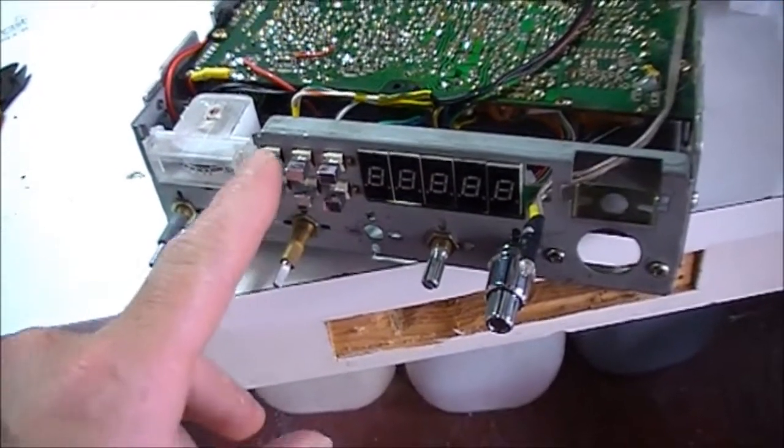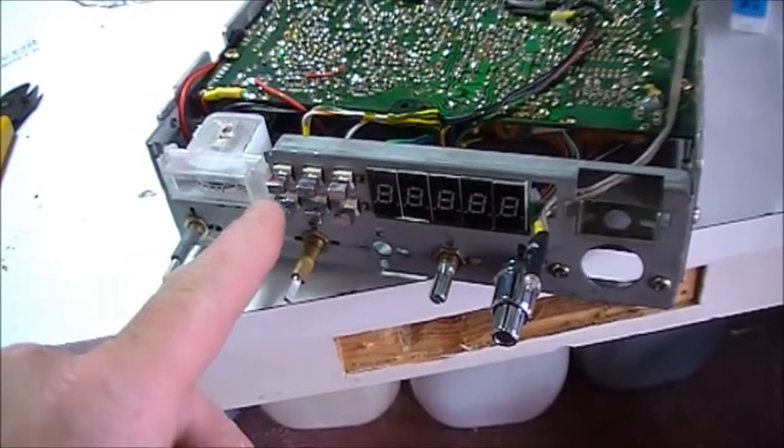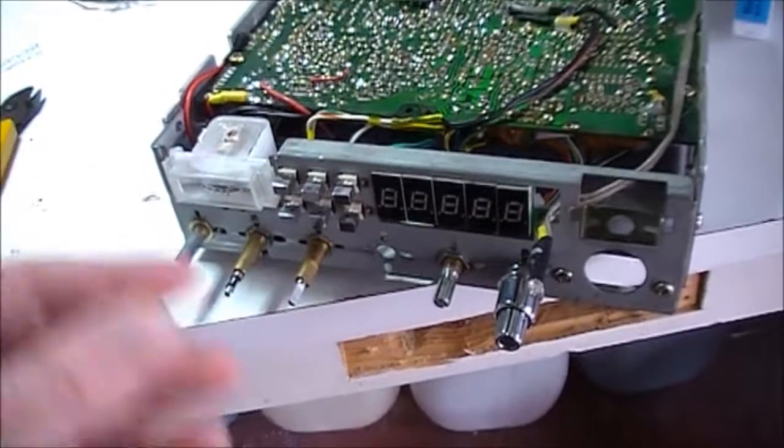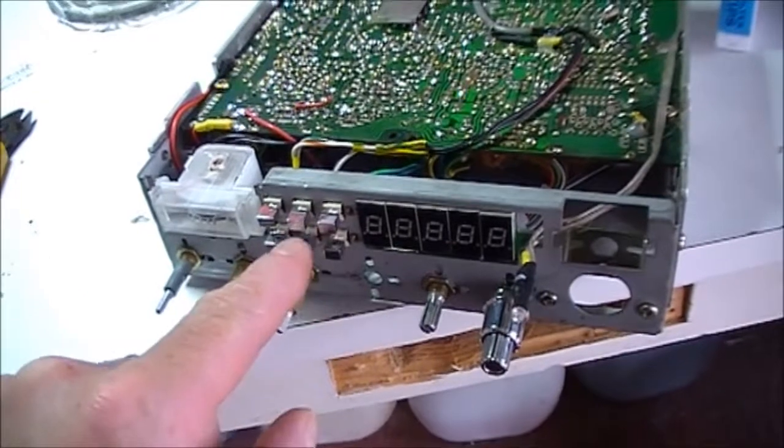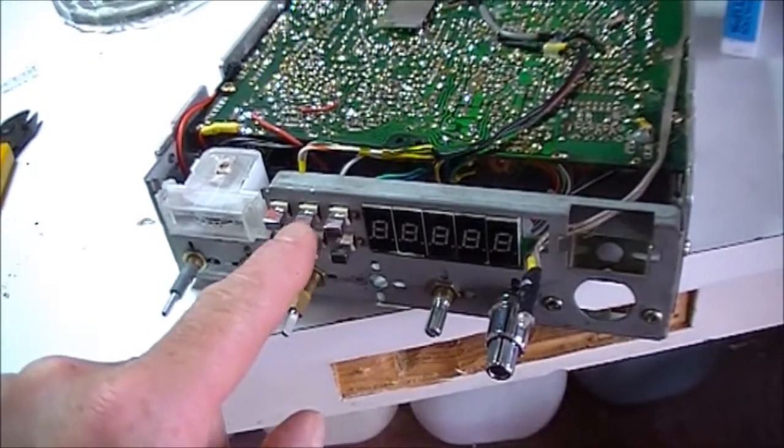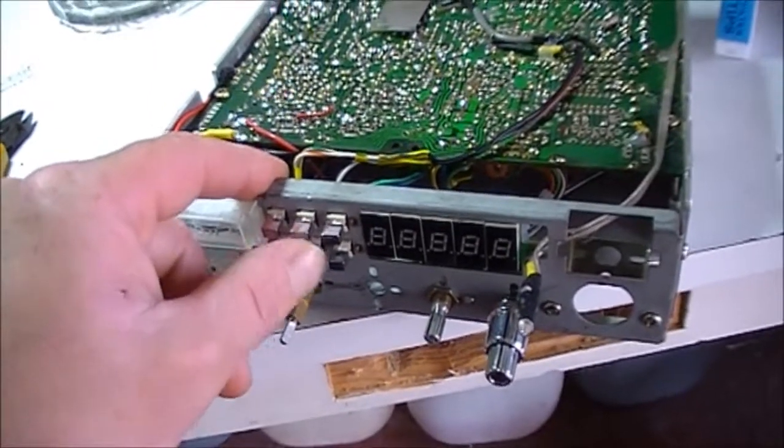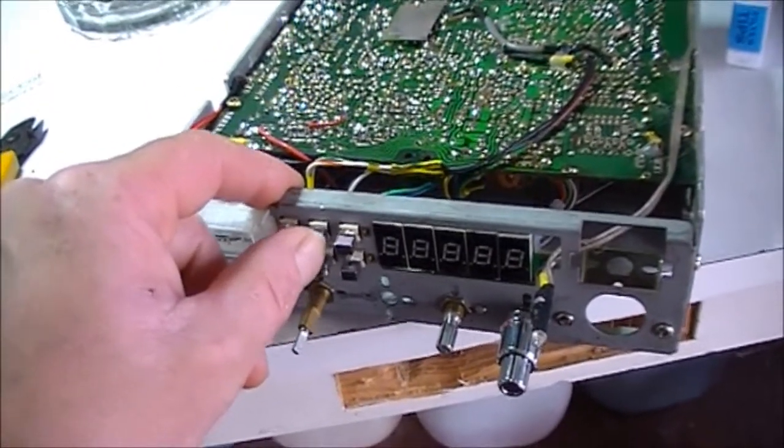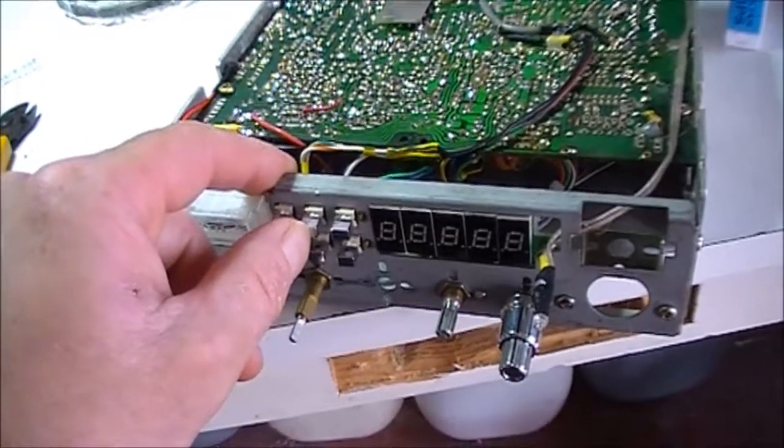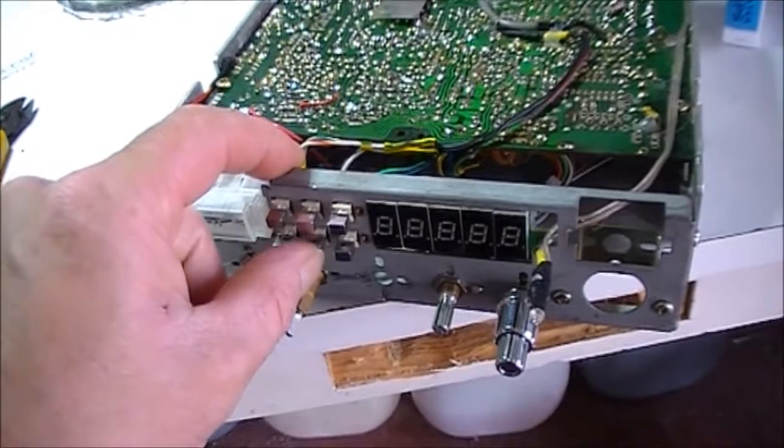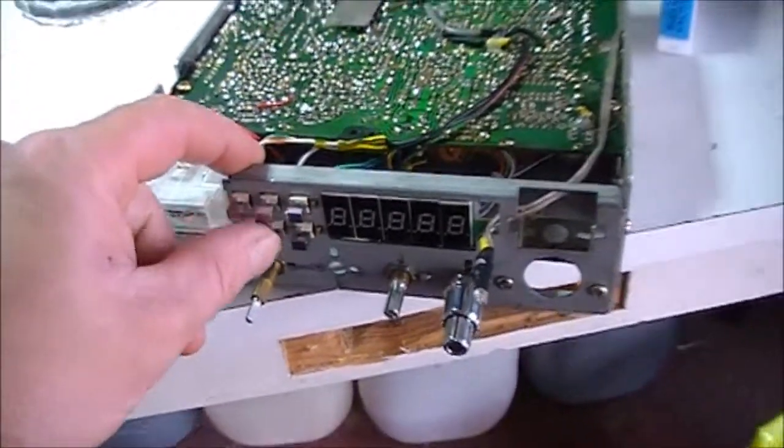These are latching switches, that means obviously when you press it in the contact is made and it stays like that until you release it. So these four have to be changed for non-latching, just momentary. So you just push it and it will come straight back out and it just makes the contact for that second that you push it in. And so these will be for the channel up and down, band up and down, blah blah blah.